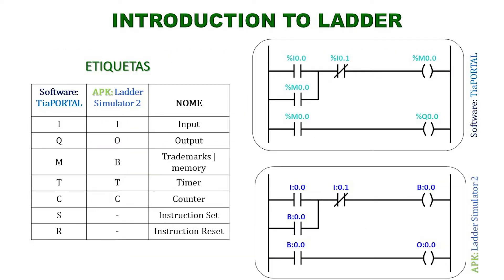Labels are always used in a ladder diagram to help us identify the elements. This table shows two examples of label types; this will depend on the software we use to make the diagram. On the right side, two diagrams are shown that fulfill the same function — the only difference is that they have different labels. These labels are the ones that the program places by default, but they can be customized or changed. The numbers that accompany the labels indicate the address of the element.